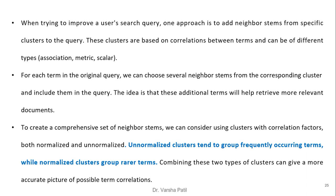For each term in the original query, we can choose several neighbor stems from the corresponding cluster and include them in the query. The idea is that these additional terms will help retrieve more relevant documents. To create a comprehensive set of neighbor stems, we can consider both normalized and unnormalized cluster types. Un-normalized cluster gives more frequently occurring terms, while normalized cluster gives rarer items. Combining both types gives a more accurate picture of possible term correlations.